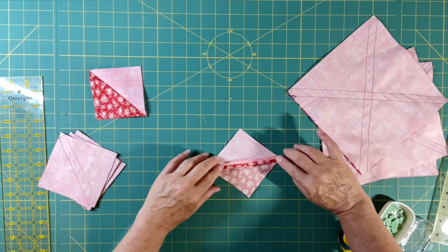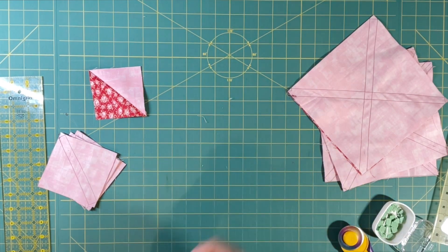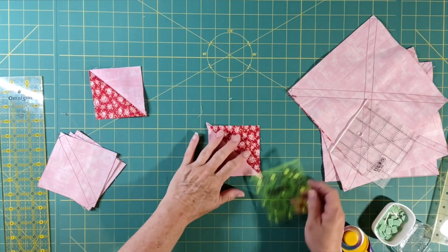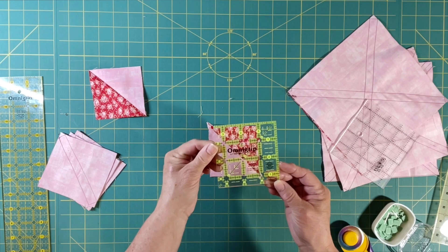So I'm going to go over to the iron real quick and open this seam and make sure my square is really flat before I trim it. Okay, so here are some of your ruler choices that you have.